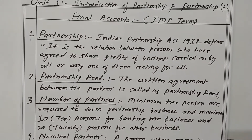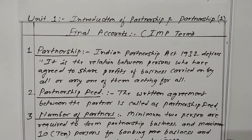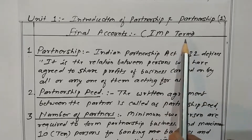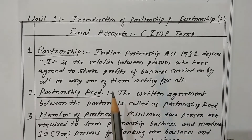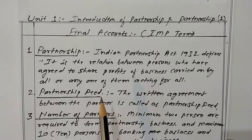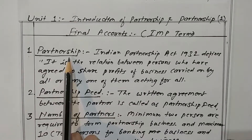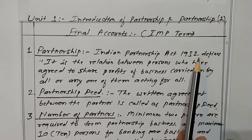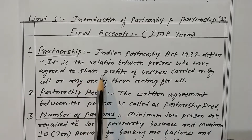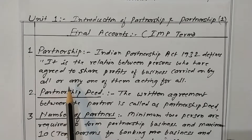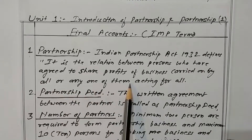Now we are going to see Unit 1: Introduction of partnership and partnership final accounts. Some important terms are given, which are helpful for question number one — such as answer in one sentence, true or false, and give the word. The Indian Partnership Act 1932 defines partnership as a relation between persons who have agreed to share the profits of a business carried on by all or any one of them acting for all.